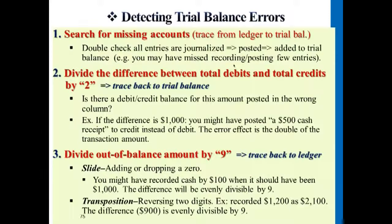That would be an example where these shortcuts still can't detect the error. Really, the most important thing is from the beginning: when you start the journal, post it to ledger, calculate all the balances to trial balance — that has to be done very thoroughly and in a lot of detail. The key takeaway today is that you have to know the debit and credit rules and how they apply to transactions.